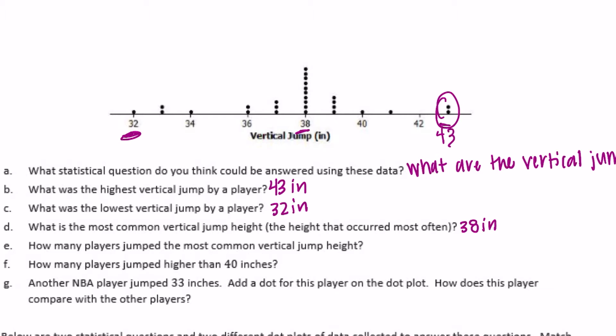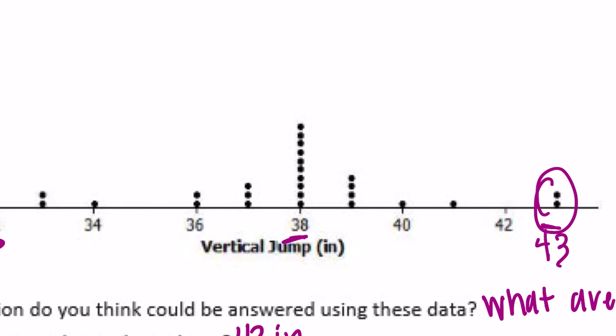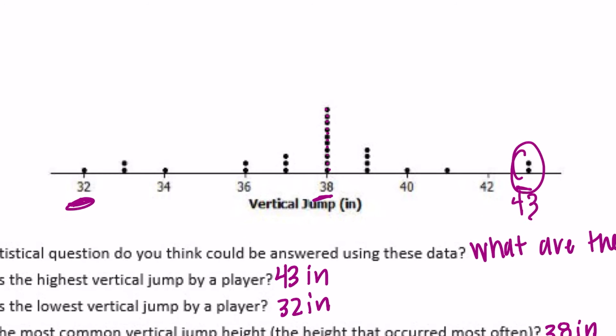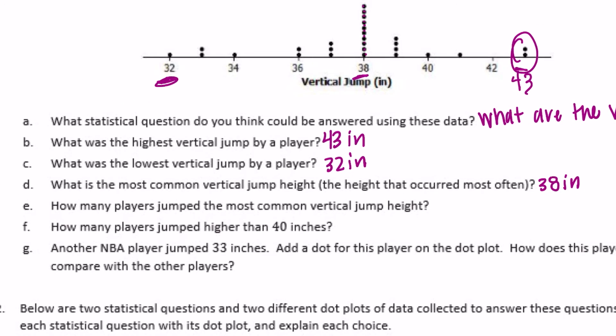How many players jumped the most common vertical height jump? So this one, how many dots are there? Let's count: one, two, three, four, five, six, seven, eight, nine, ten. So there were 10 players who jumped the most common height of 38 inches. How many players jumped higher than 40 inches? So we're looking for higher than 40, anything this way and above. There's one, two, three, so just three players.